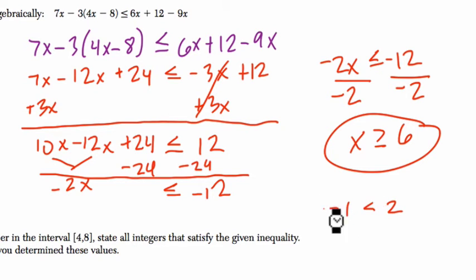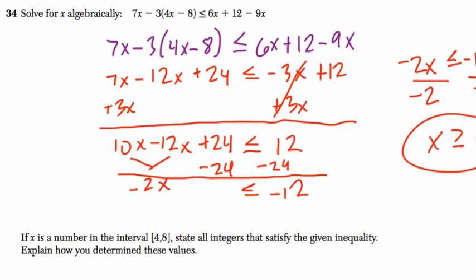So again, whenever you divide both sides by a negative value or multiply by a negative value on both sides you have to change the direction of the inequality.